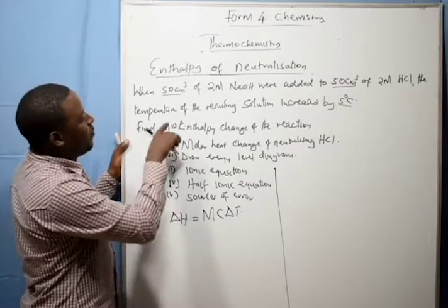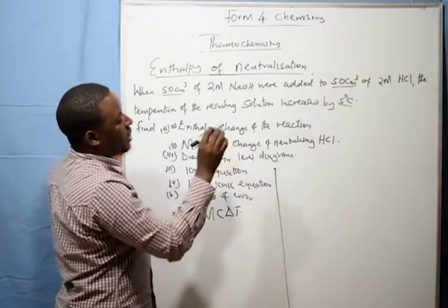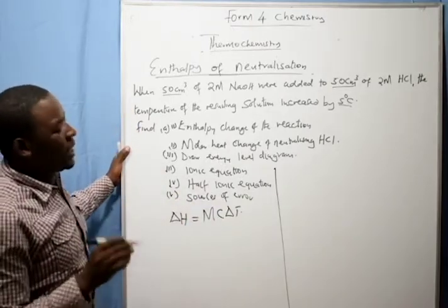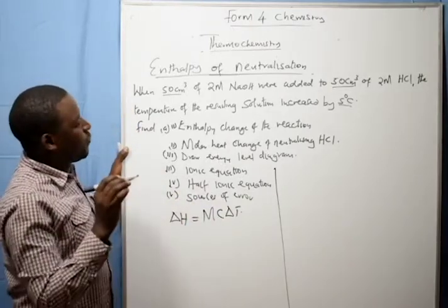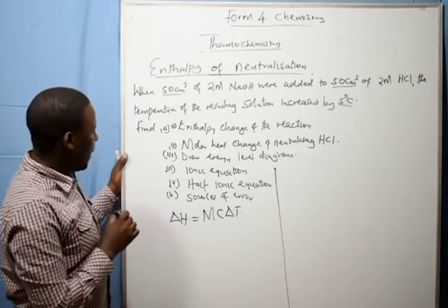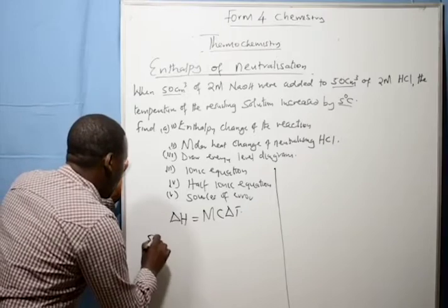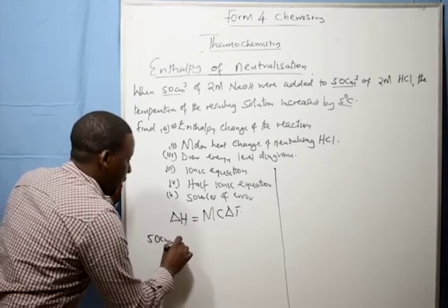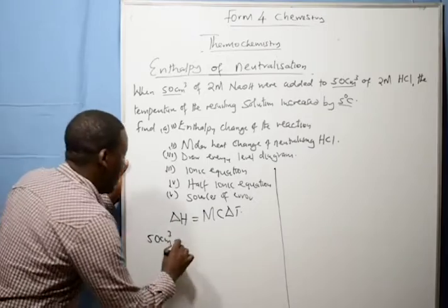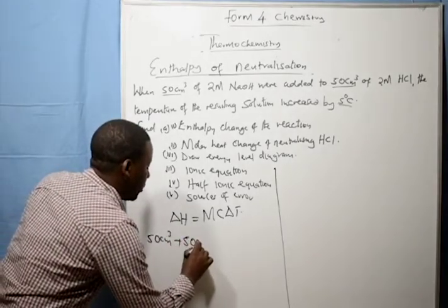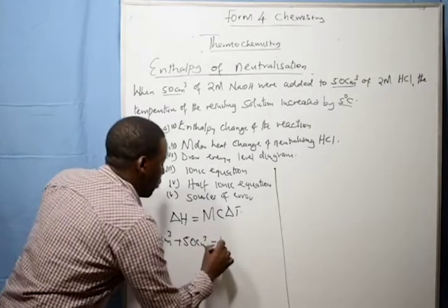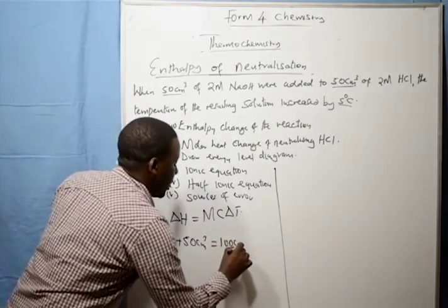So let's find what is the volume of the resulting solution. You get the volume by adding 50 cubic centimeters of sodium hydroxide. The total volume is 100 cubic centimeters.